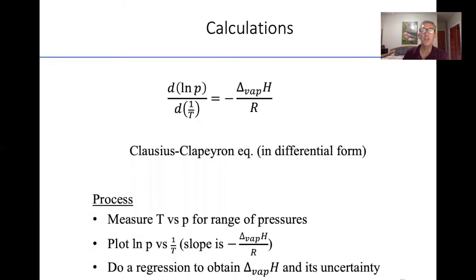From those 10 boiling points at different pressures, you will determine the enthalpy of vaporization. You will see in the lecture course an equation called the Clausius-Clapeyron equation, and that relates temperature, pressure, and the enthalpy of vaporization. Here it's in differential form. The process is you measure T versus P for a range of pressures, then you'll plot log P versus one over T. And the slope is negative enthalpy of vaporization divided by R. You'll do a regression to determine the enthalpy of vaporization and its uncertainty.